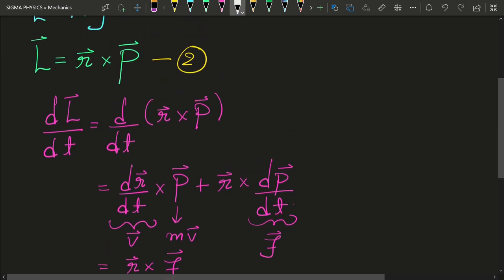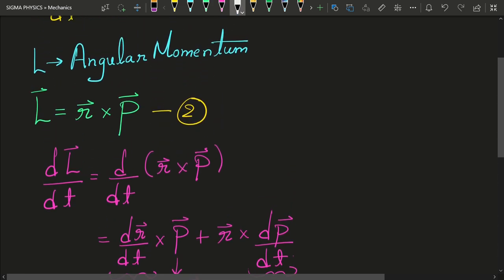So we can see here that just like how we had defined angular momentum as the position vector crossed with the momentum.